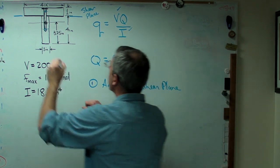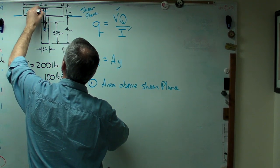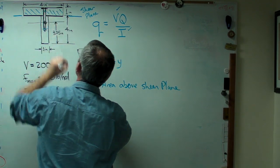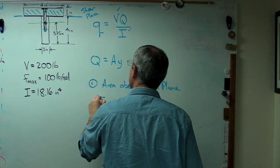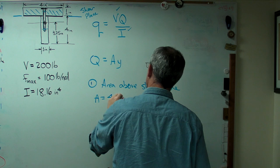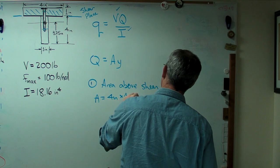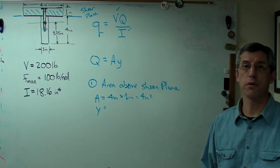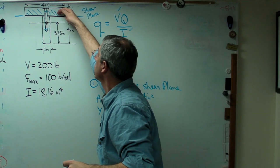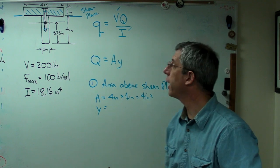That's this area right here. The area of that box is just the base times the height. So the area is 4 inches times 1 inch in height. And that's just 4 inches squared. Now, the distance Y is the distance from the centroid of this box right here to the centroid of the entire shape.